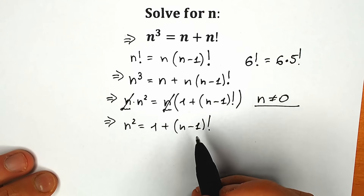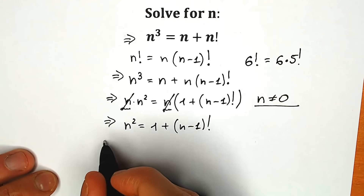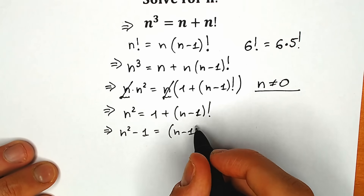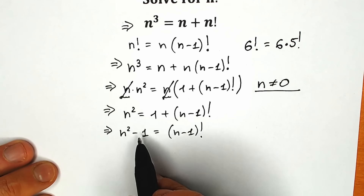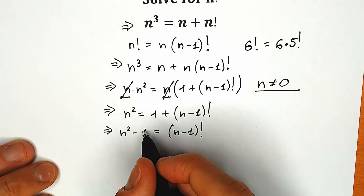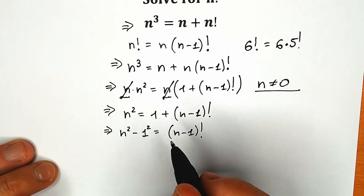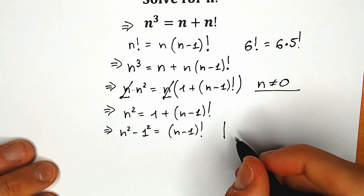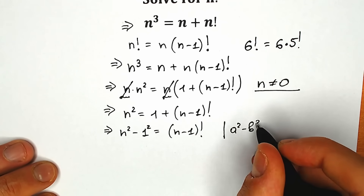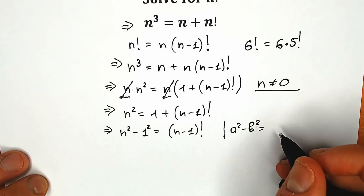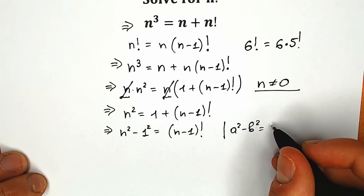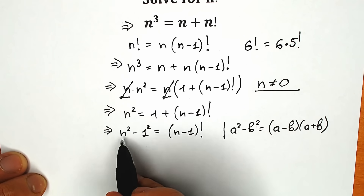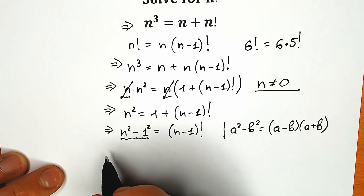Next, let's move 1 to the left side. As a result, we have n squared minus 1 equal to (n−1) factorial. Notice that n squared minus 1 is a difference of squares — the most basic algebraic identity: a squared minus b squared equals (a minus b) times (a plus b). Let's apply this formula to the left side.